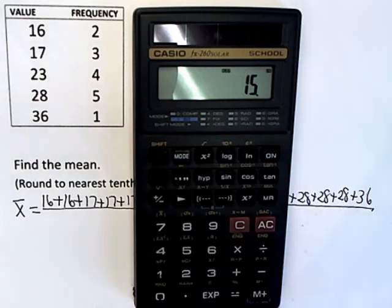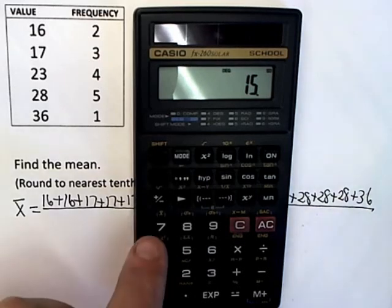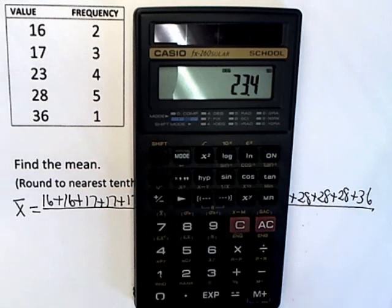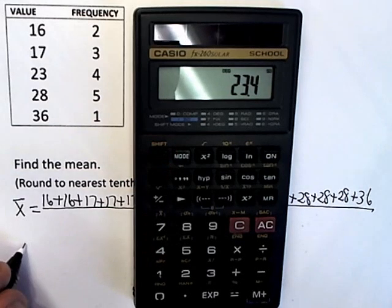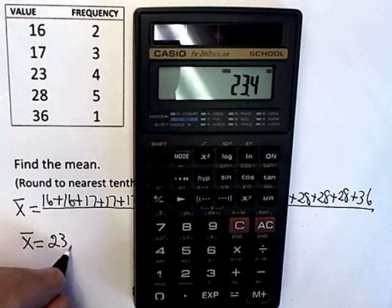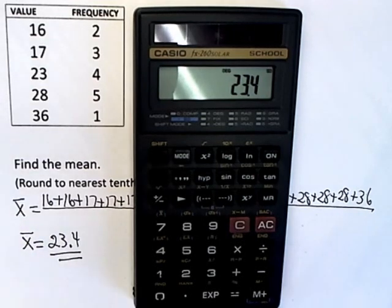So I've got them all in there. If I want to do the mean, I go to X bar. Well, X bar is above the seven. And again, if you're looking at your own calculator, you can see that. So shift seven gives me the mean. And so the mean is 23.4. And it asks us to round it to the nearest tenth, and that's what that is.